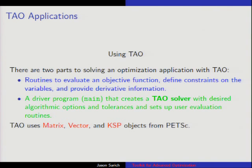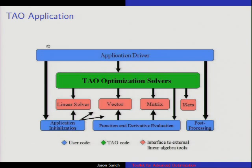When you solve using TAO, you need routines: you need to say this is my function value, this is my gradient at a given point, and this is the Hessian. You also need a driver program that creates TAO, sets everything up, solves your problem, and analyzes the results. We use everything from PETSc — matrices, vectors, and KSPs mostly. PETSc does all the linear solvers, we do the optimization solvers, and you need to write everything that's specific to your application.